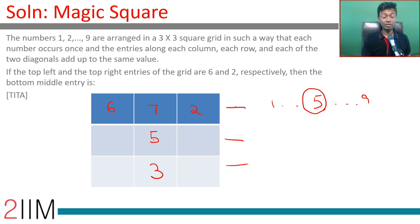Now you can fill the entire grid. 6 plus 5 is 11, this will be 4. 2 plus 5 is 7, this will be 8. This automatically adds up to 15. 6 plus 8 is 14 plus 1, this is 9. Everything is 15. This is the entire grid.